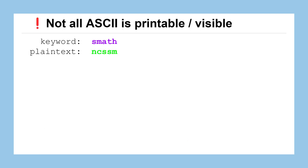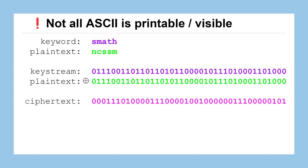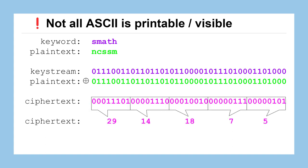One warning: using XOR to combine keyword and plain text may produce a binary ciphertext stream where groups of 8 bits don't correspond to the printable ASCII characters in the range 32 to 127. For example, using keyword SMATH with lowercase ncssm, the XOR produces byte values of 29, 14, 18, 7, and 5 — none of which have printable characters.